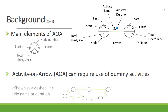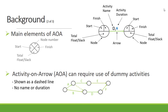The activity on arrow can require the use of a dummy activity. The dummy activity is represented by a dashed line and normally has no name or duration. In this example, activity D is connected to B, and activity D is connected with a dummy activity to activity A.